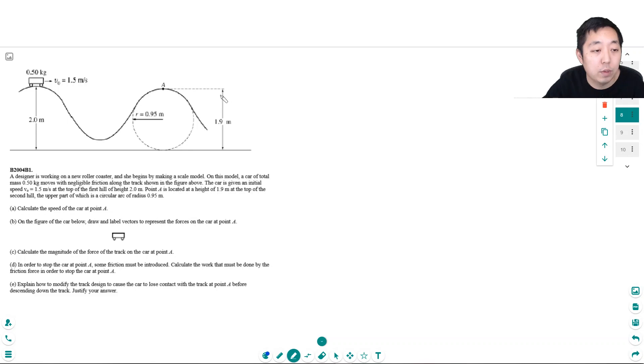Point A is located at a height of 1.9 meters at the top of the second hill, the upper part of which is a circular arc of radius 0.95 meters. Calculate the speed of the car at point A.